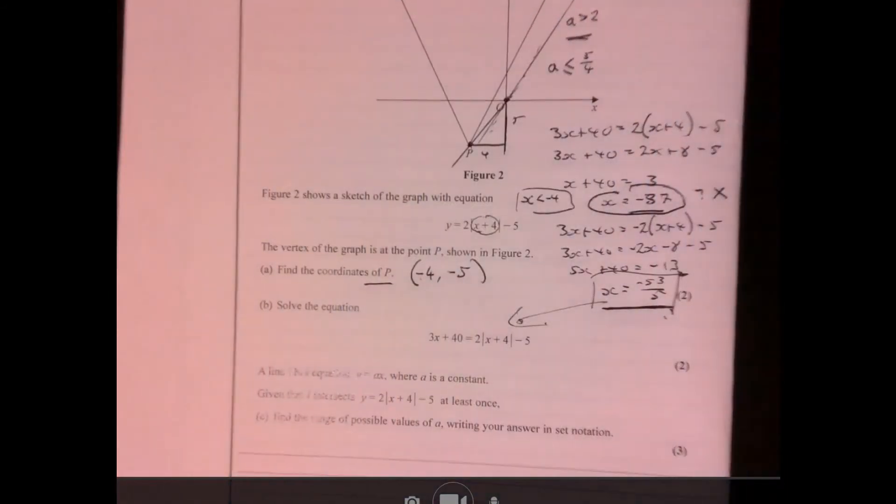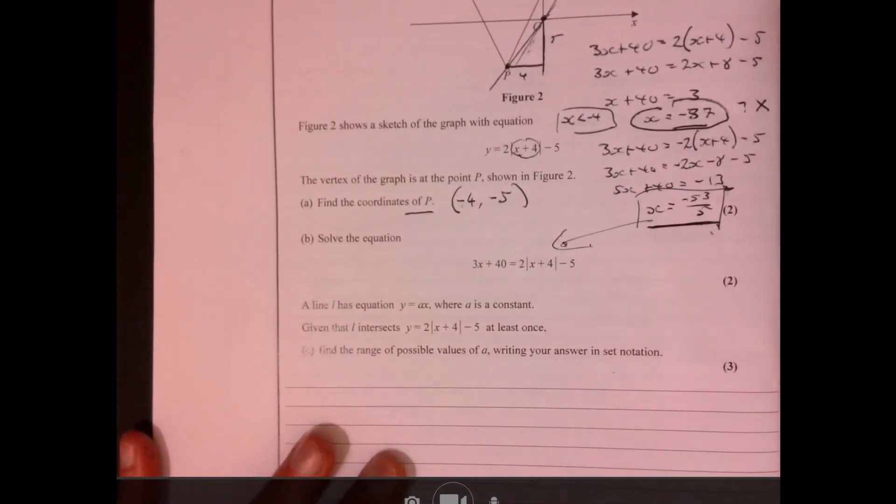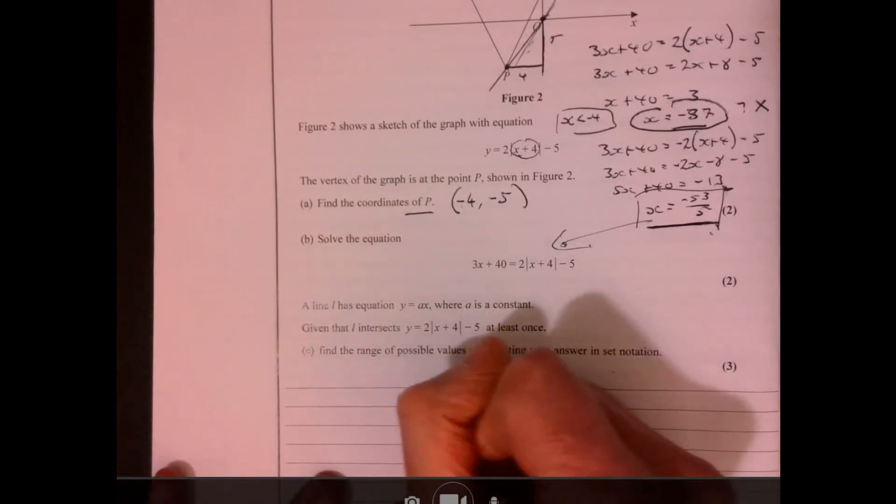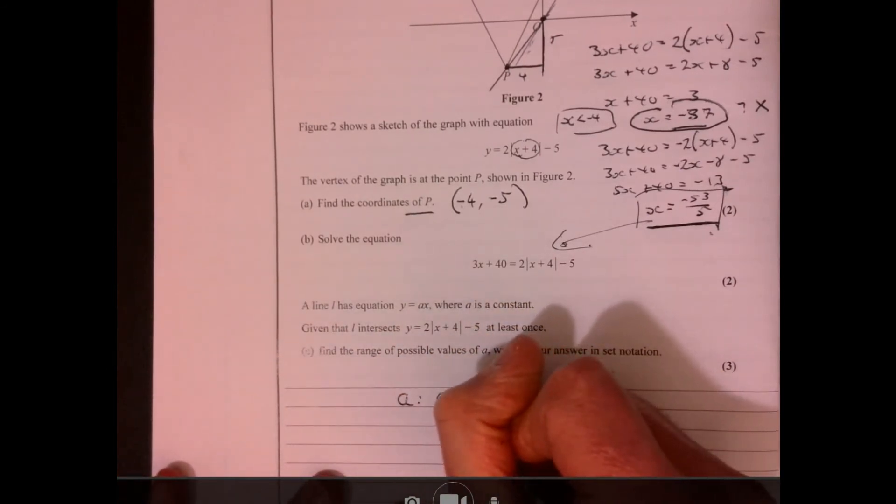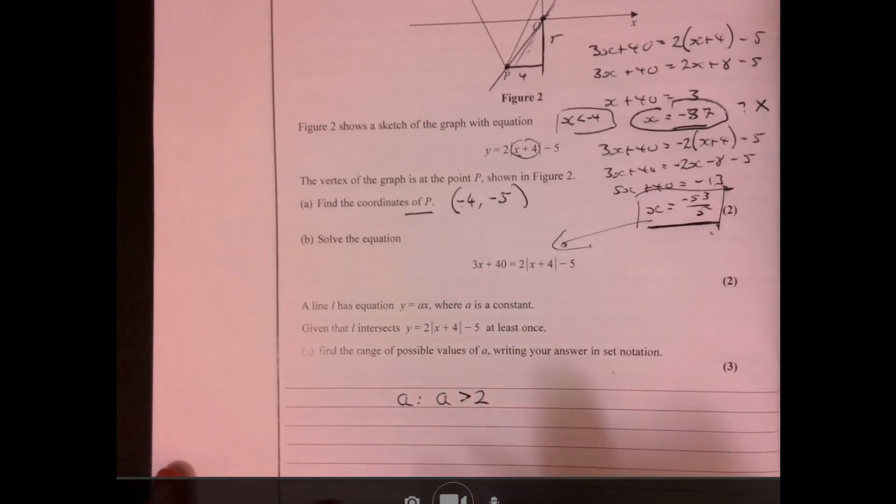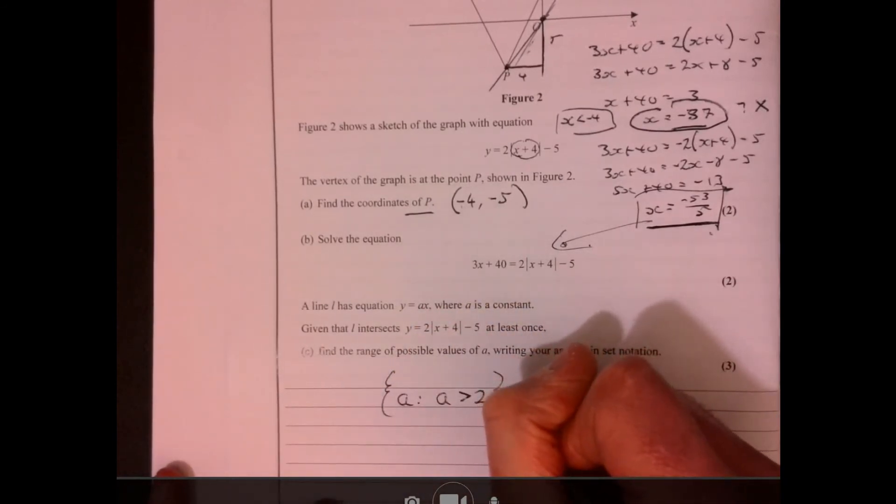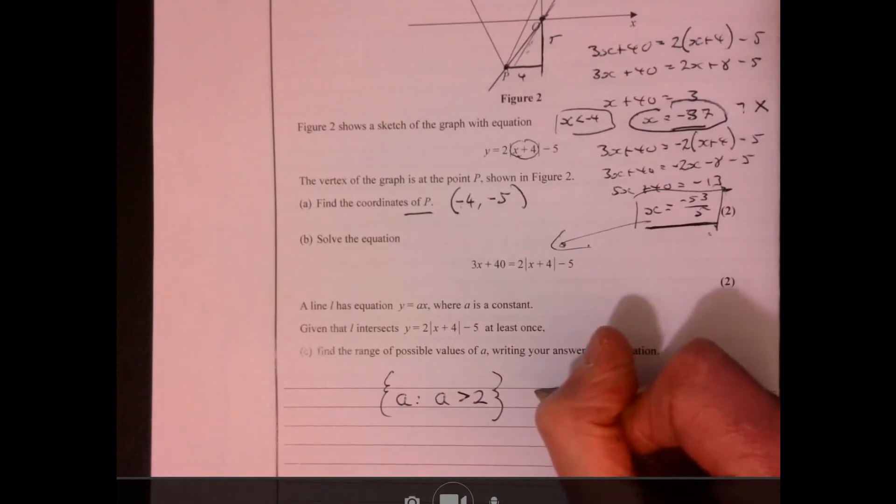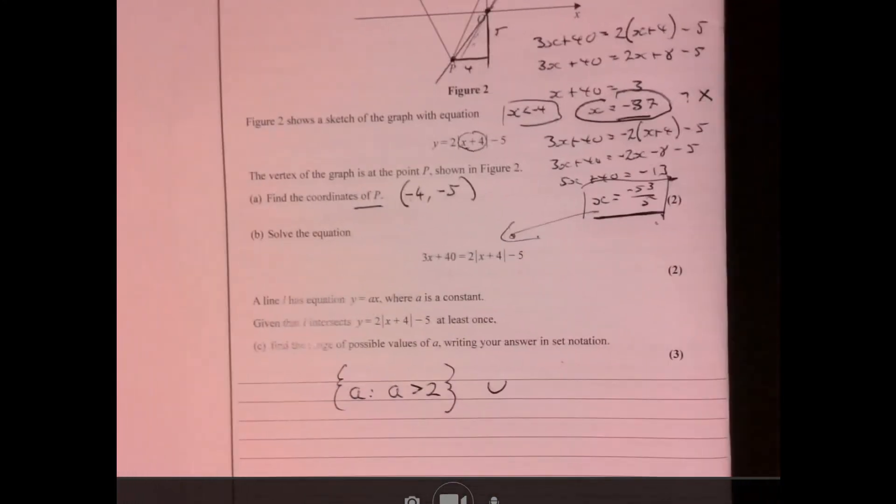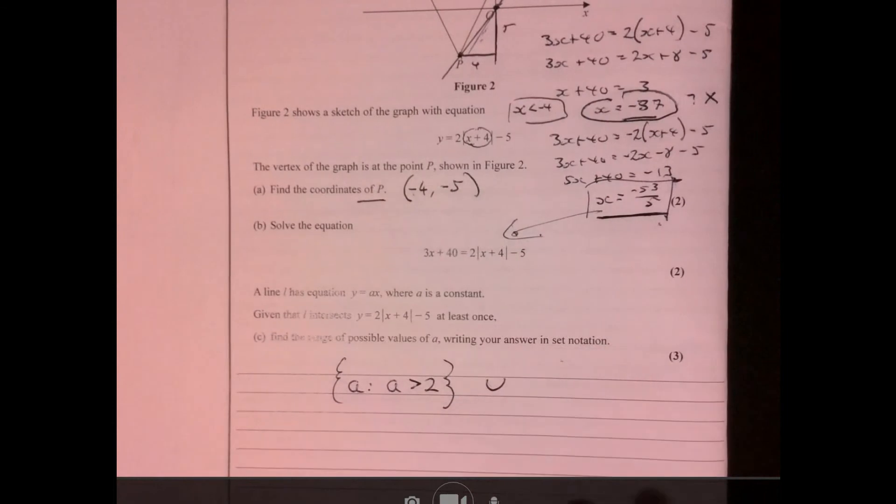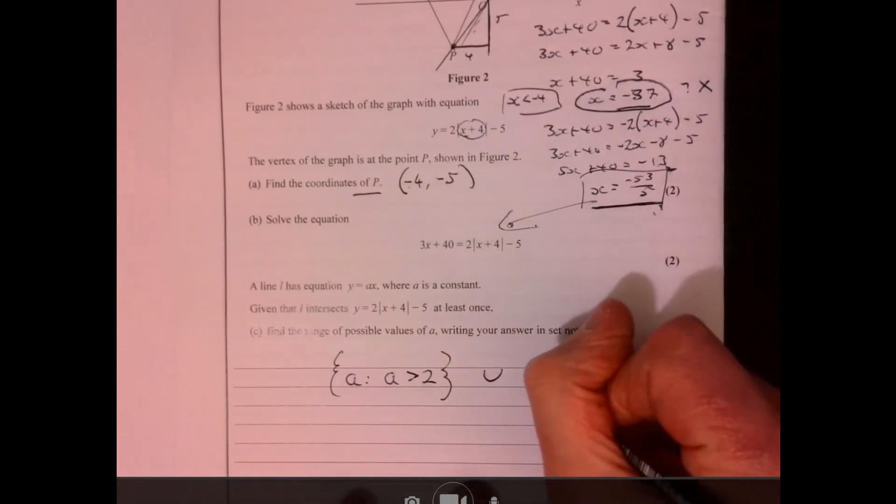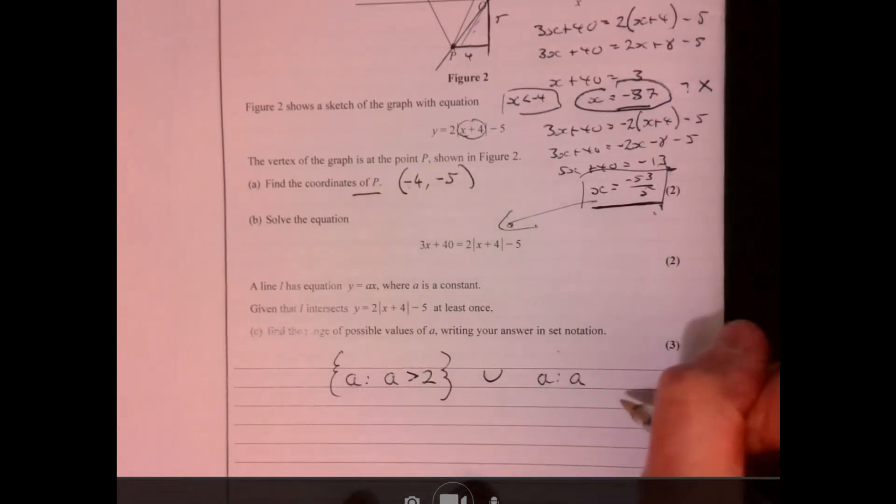Now we also need to put this into, it does say use set notation here. So to be absolutely correct and to get all of the marks, we need to say a is a member of a group where it's going to be more than 2, union, just kind of just means it all. It would also say it could be less than or equal to 5 over 4. There we go.